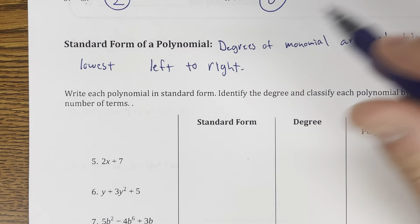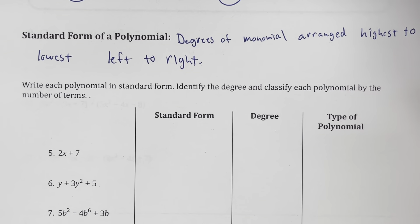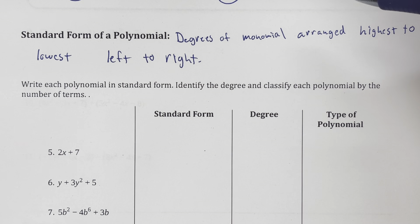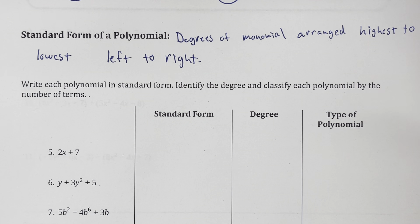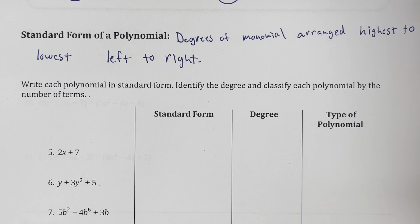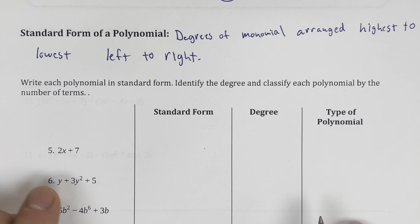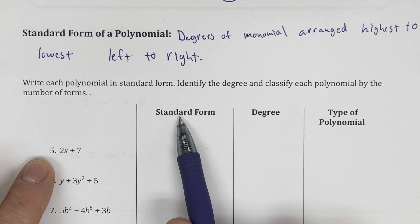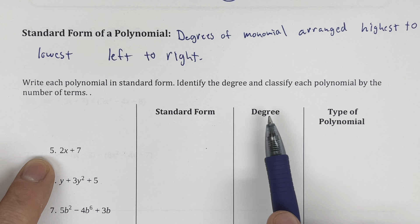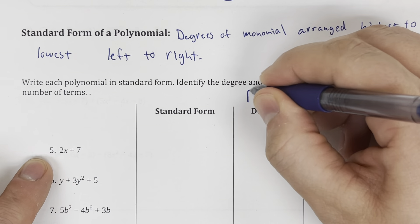The standard form of a polynomial is when the monomials are arranged from the highest to the lowest degree, left to right. So we want x squared before x, y cubed before y — we put the degrees in descending order when we read from left to right. We'll put it in standard form, find the degree of the polynomial, and then classify it as a binomial, trinomial, or monomial.